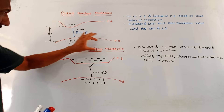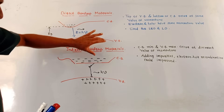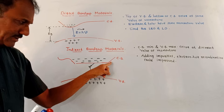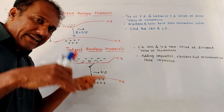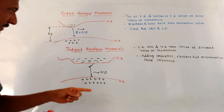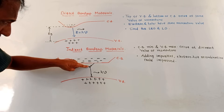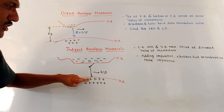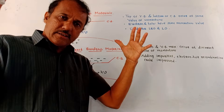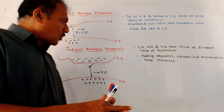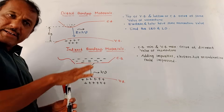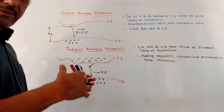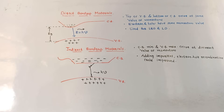Next is indirect bandgap semiconducting material — it is altogether different compared to the earlier case. Here, the bottom of the conduction band and top of the valence band are not occurring at the same value of momentum. When the electron falls, it attends a certain intermediate state, and after that it reaches the valence band and gets recombined with the hole. So the time required is more, but by adding impurities you can reduce the time required for the recombination process.